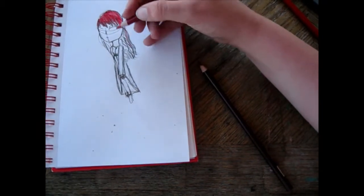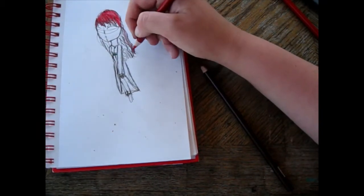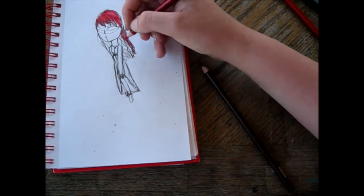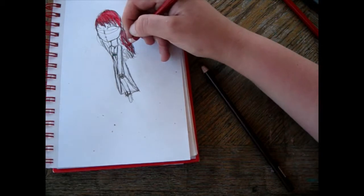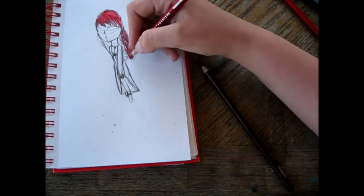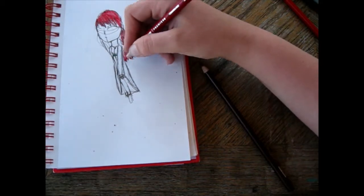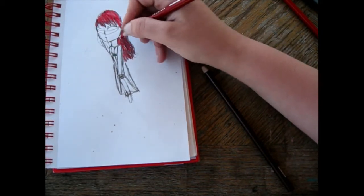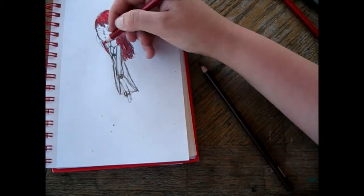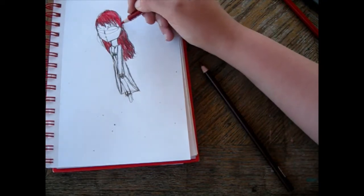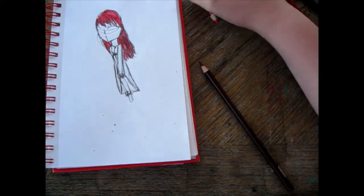Quick question: do you ever hate it when you're drawing, you set your pencil down to erase something, and then boom your pencil rolls off the table onto the ground? And it's not like you can just roll over and grab it, it's got to that spot.